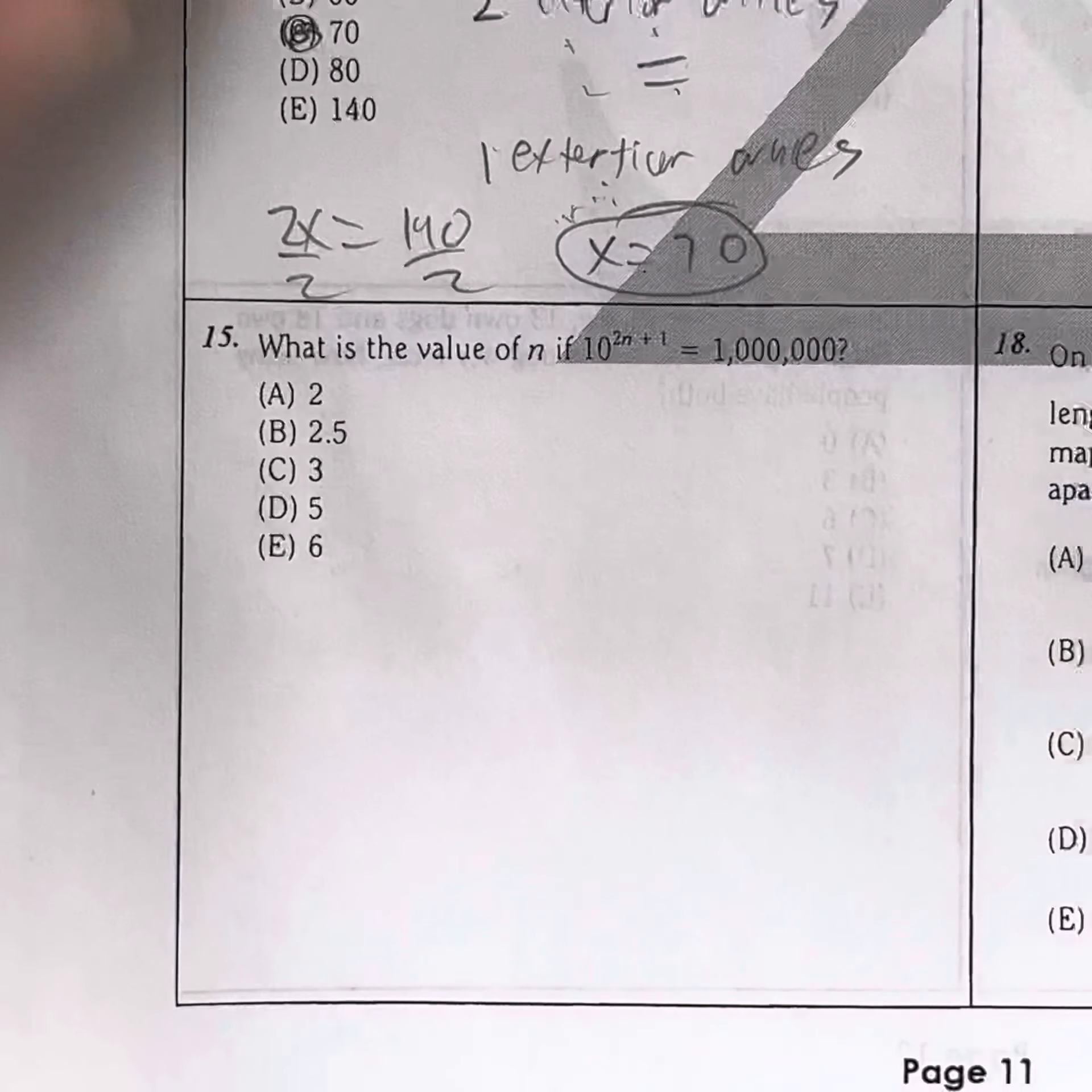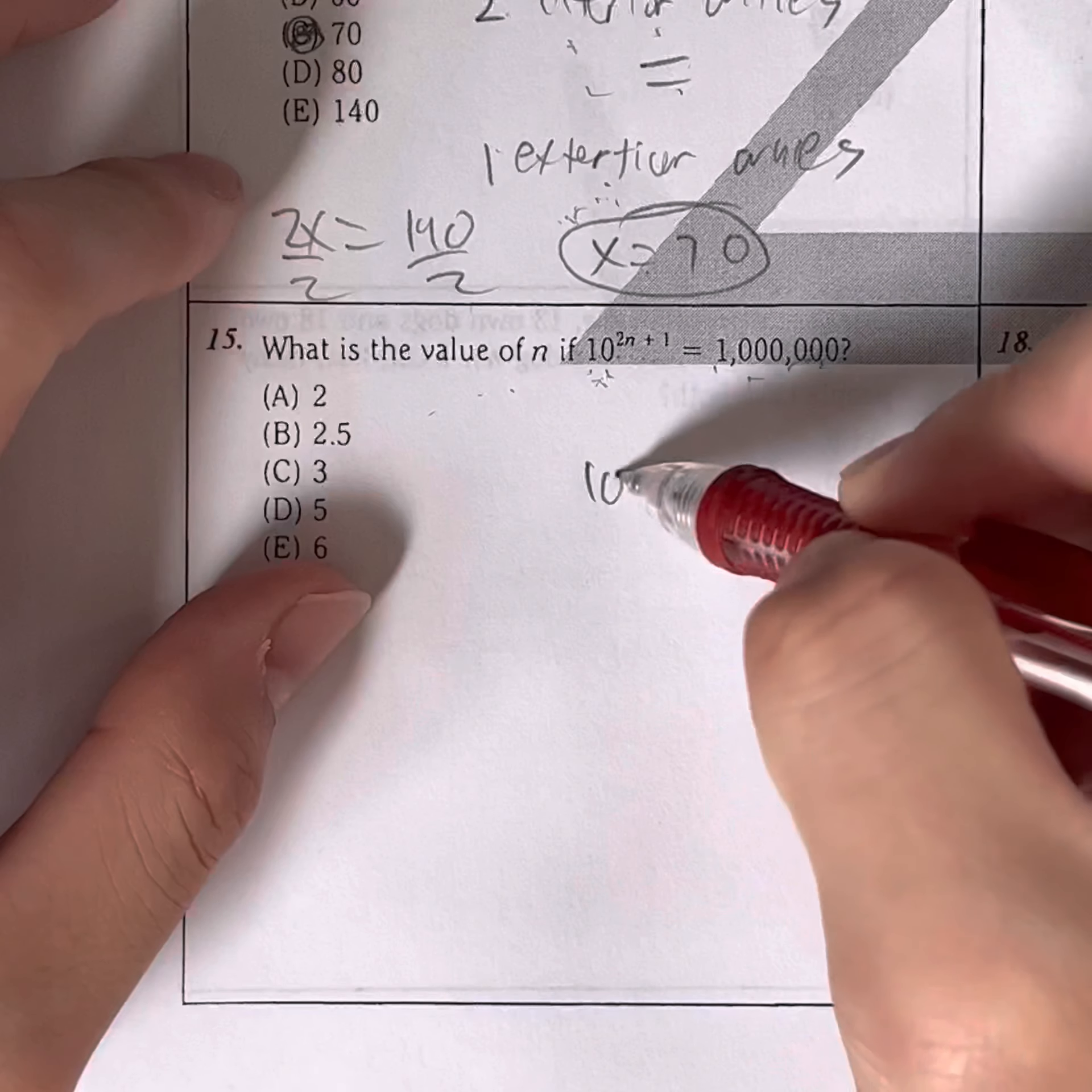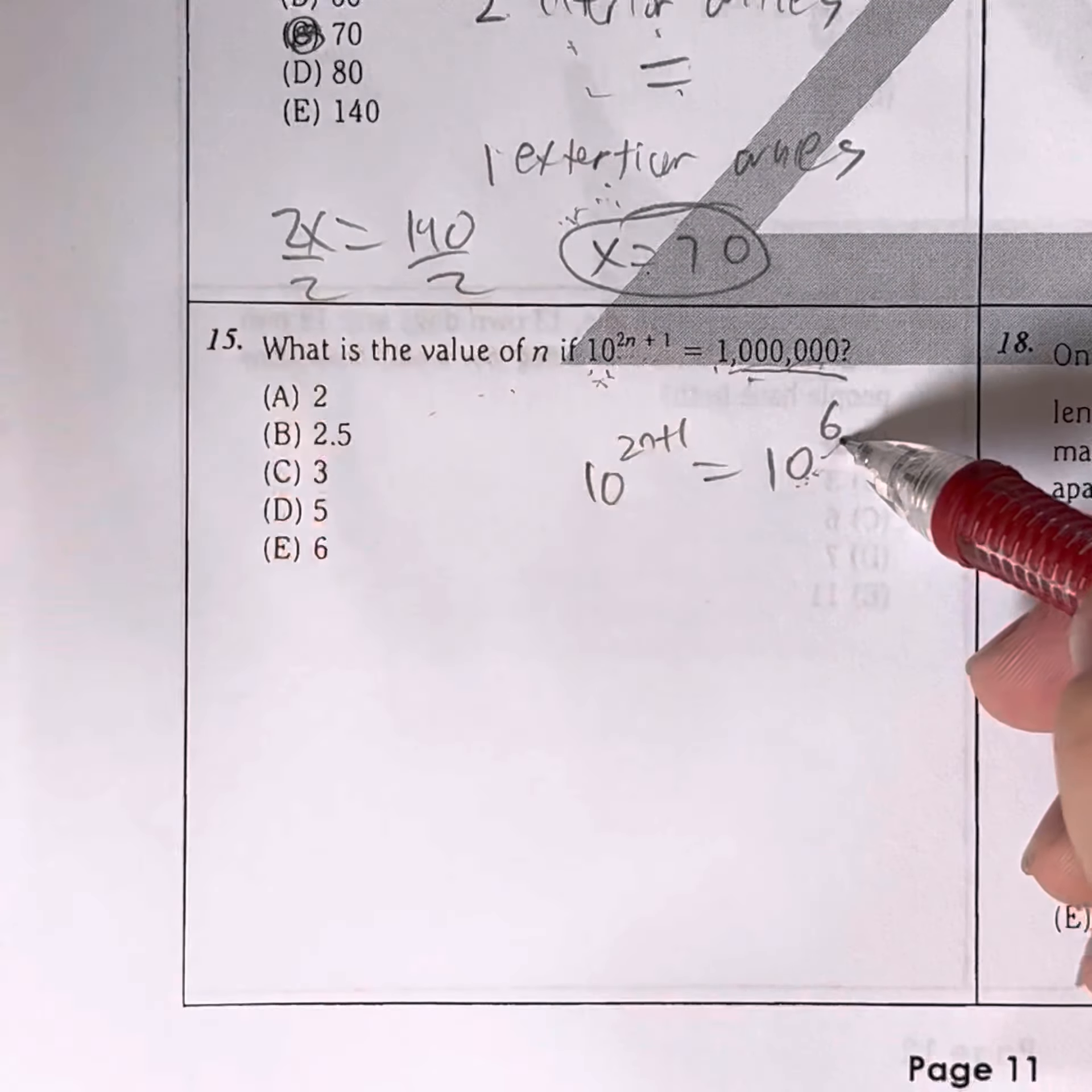Moving on, question 15. What is the value of N if 10 to the 2N plus 1 is equal to 1,000,000? So basically, 1,000,000 can be rewritten as what base 10? That's the same as 10 to the 6th power. 10 to the 6th power is the same as 1,000,000 because there are six zeros in it. You just count the number of zeros, and that's what 10 to the power is.